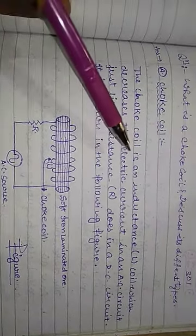The choke coil is an inductance coil which decreases the electric current in an AC circuit, just like resistance does in the DC circuit.